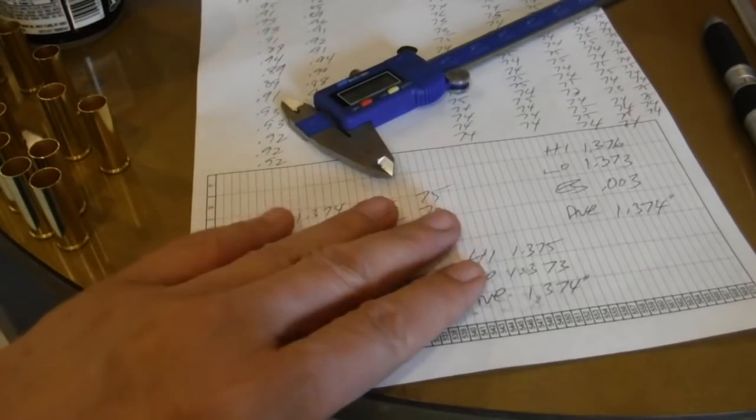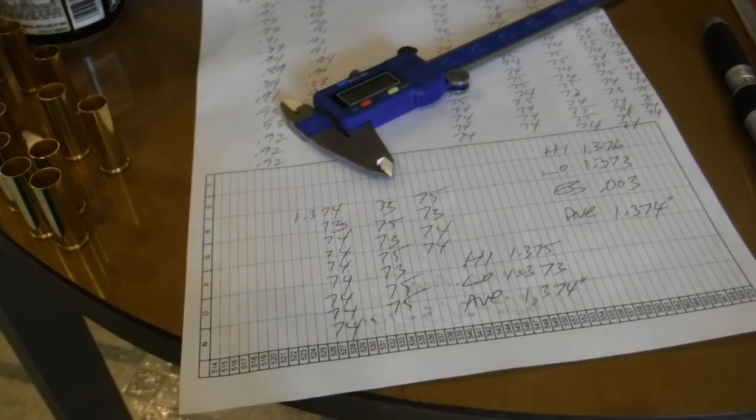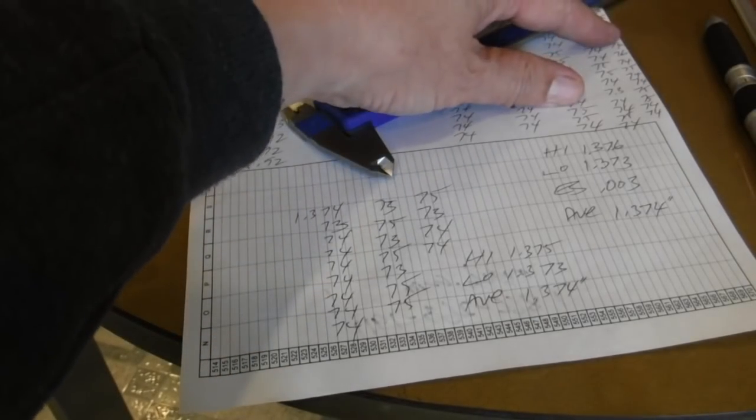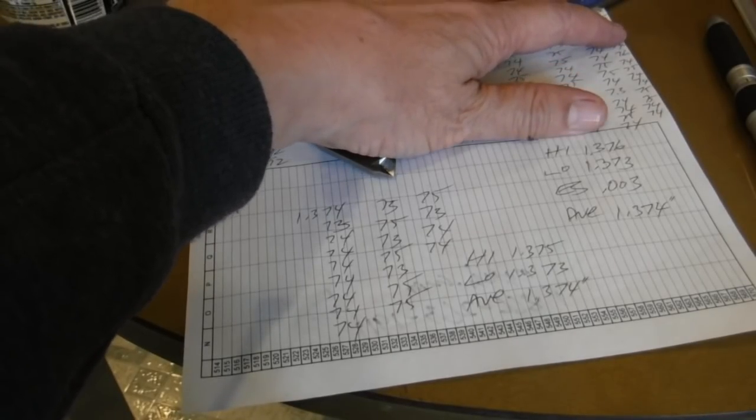So, you get pretty close just doing the 20 random, but the measuring of the 100 is still better.